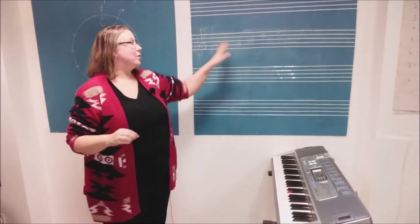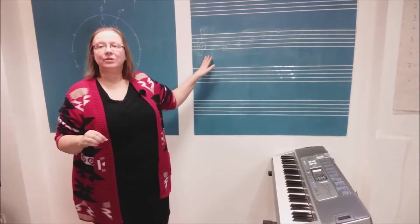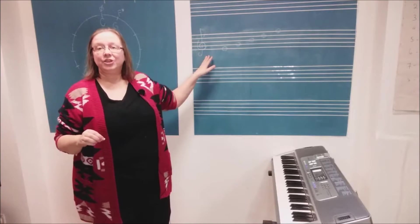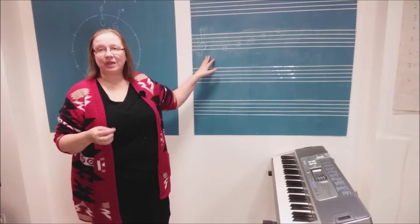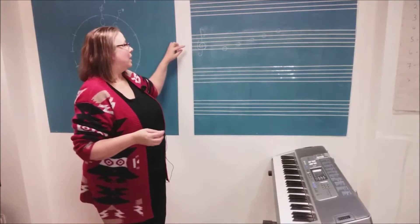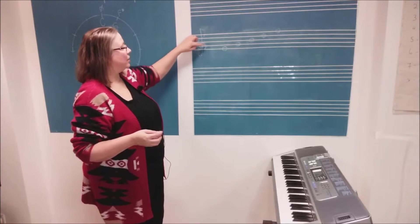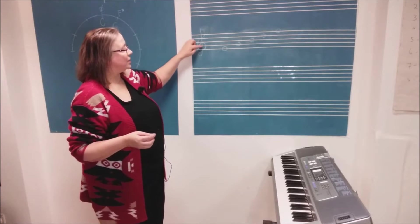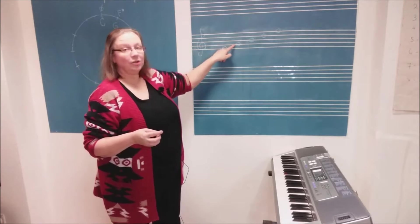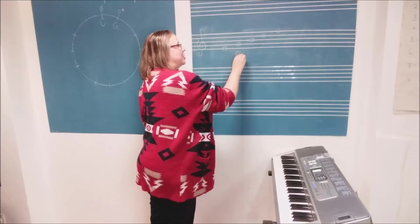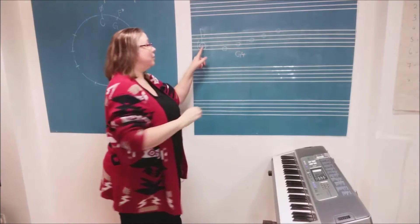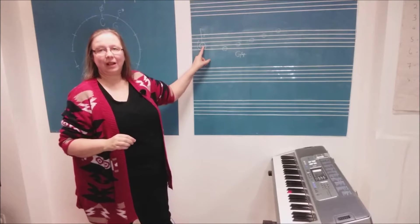Now we know this is the treble clef, also known as the G clef, and the G clef tells us where to read the note G or G4. In this case, it's on the note in the middle of the spiral, which is this one. So the note that sits on line two we know is G4, and we know that because of the treble clef.